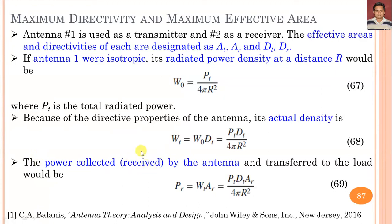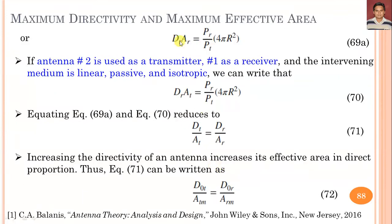The power collected by the receiving antenna and transferred to the load is Tr = Wt × ar = Pt·dt·ar / (4πR²). Rearranging, we get dt × at = Pr/Pt × 4πR². In the second case, where antenna 2 is transmitter and antenna 1 is receiver, and the intervening medium is linear, passive, and isotropic, we get dr × at = Pr/Pt × 4πR². Equating these two equations gives the relation dt/at = dr/ar.